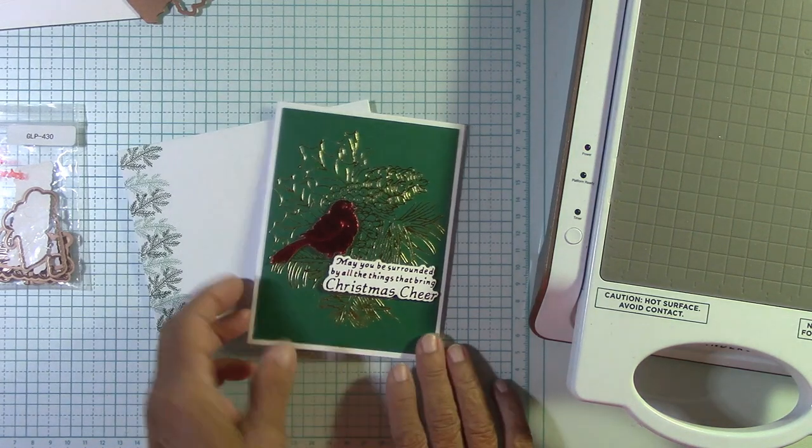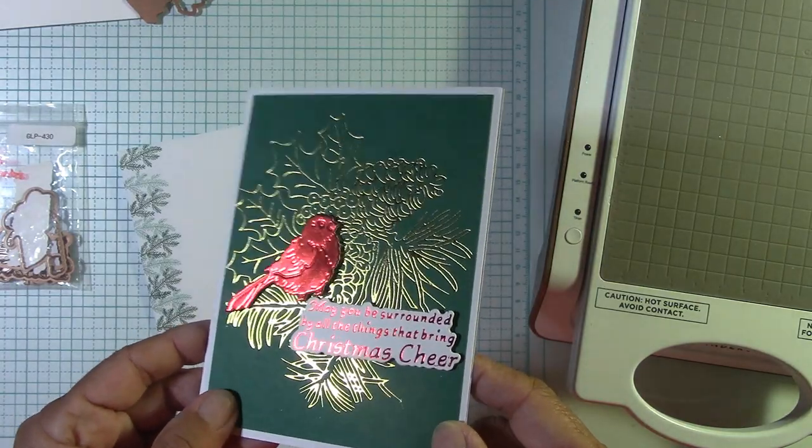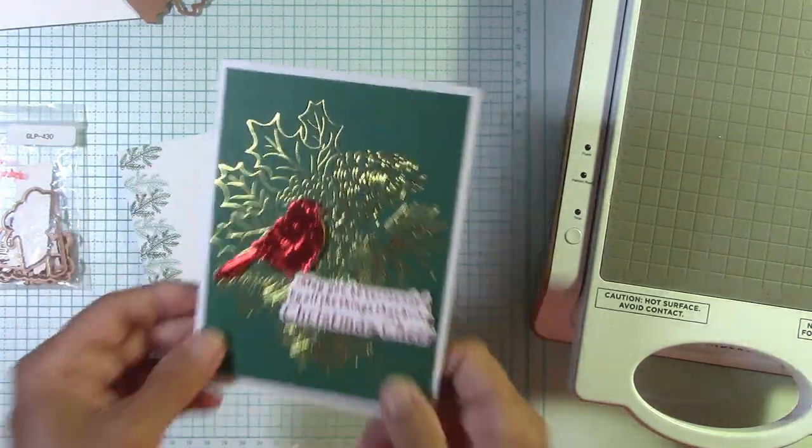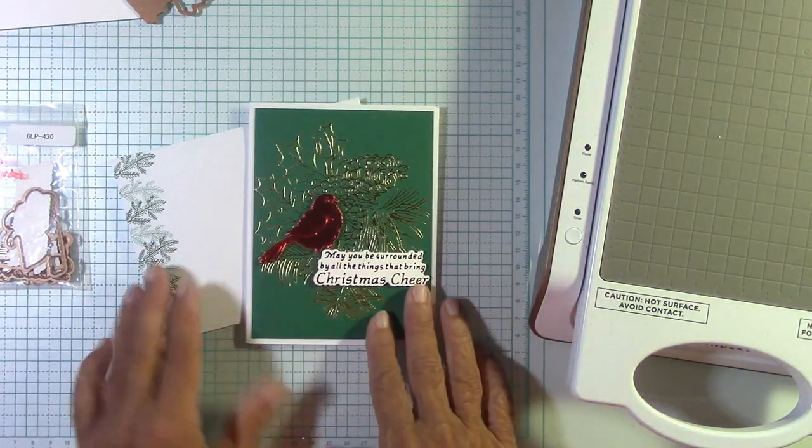This is so pretty. And we're going to foil on colored cardstock, which is so much fun. Every bit of this is foiled. Absolutely gorgeous. I'm going to show you how to get that bird a nice solid red.